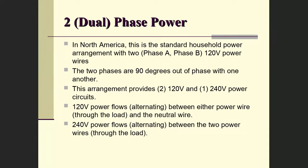If we look at two-phase power, physically the configuration requires an additional wire. In North America, this is the standard used for household power — the most common arrangement is dual-phase power. Here, we typically have two power wires and one neutral wire, so altogether we really have three wires: one power wire for phase A, one power wire for phase B, relative to neutral. Both phases are 120 volts.